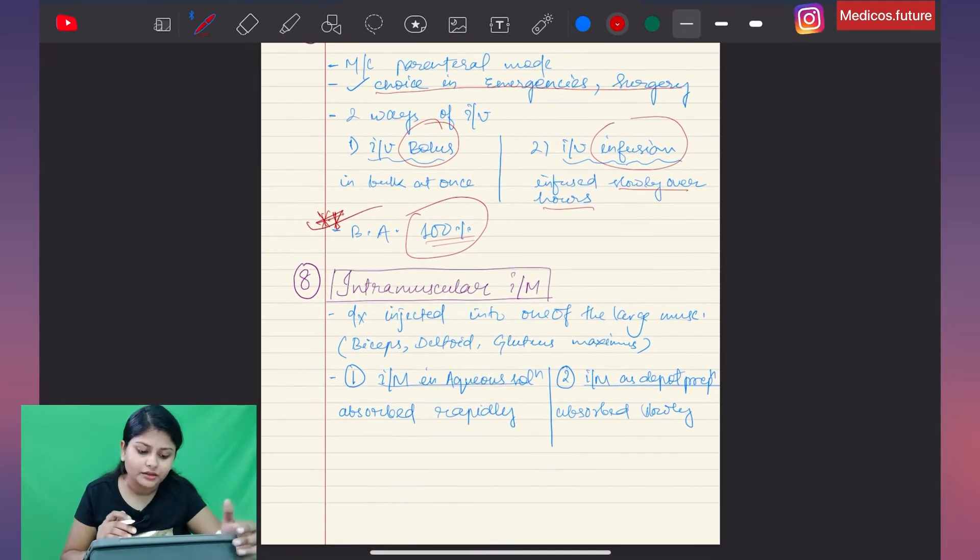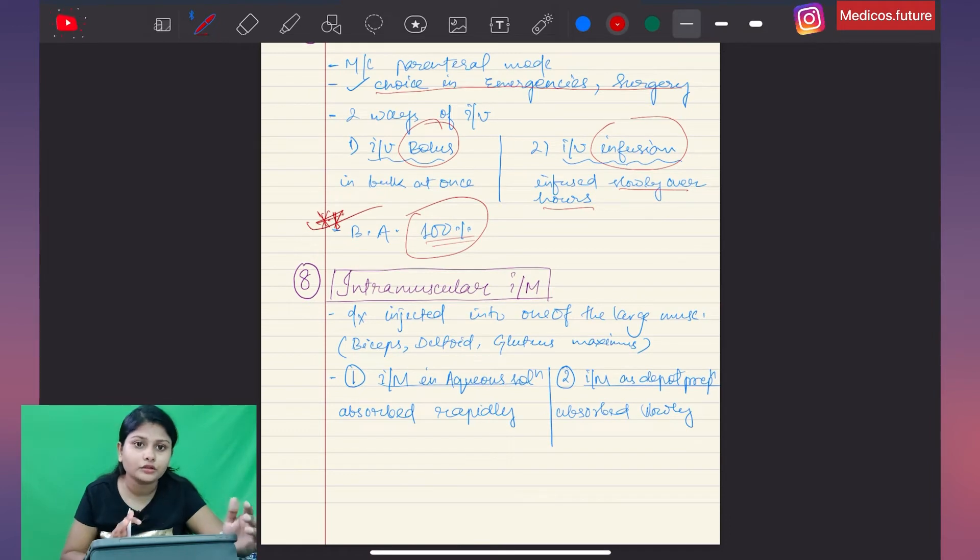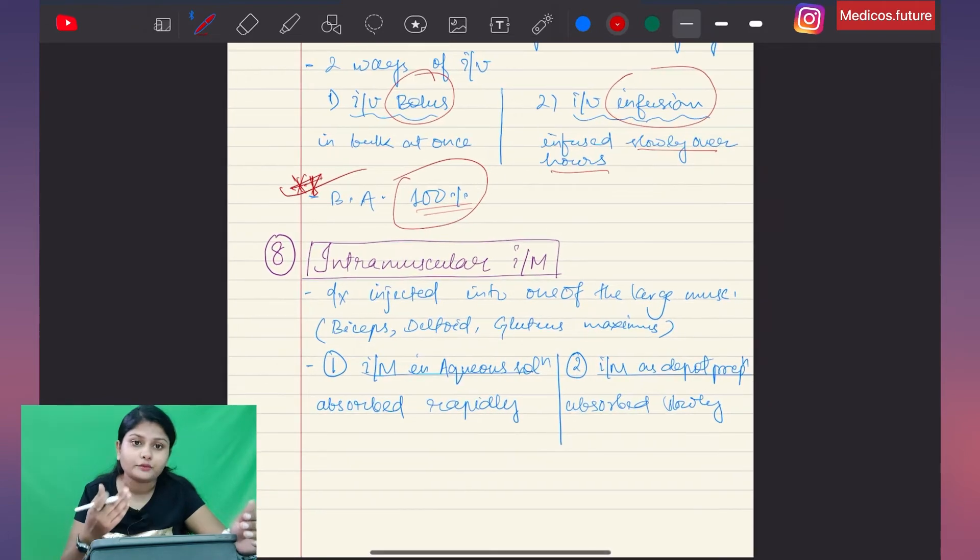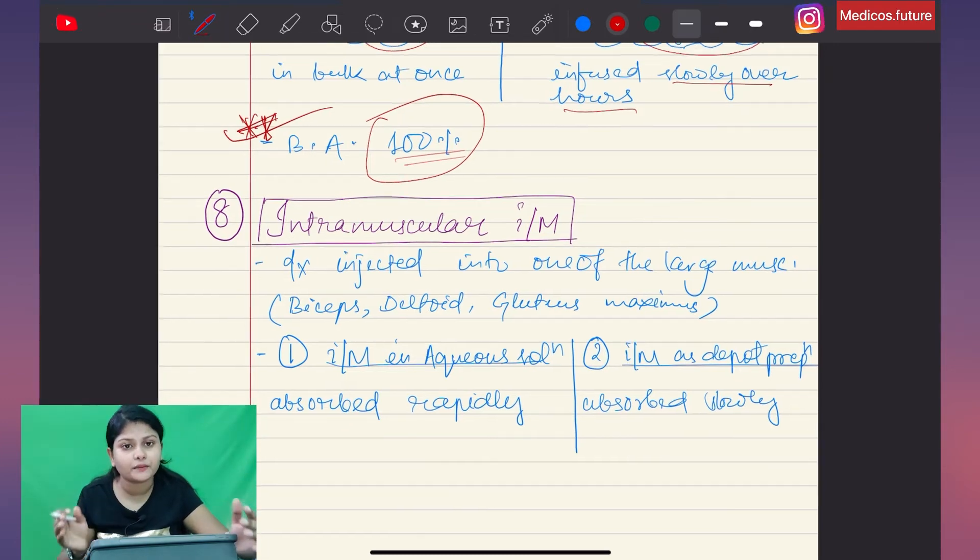Intramuscular: the drug is injected into one of the big muscles such as the deltoids, biceps, and gluteus maximus. It is slower but has two modes of action: aqueous solution and depot preparation. In aqueous solution, the drug injected in the muscles will rapidly absorb. In depot preparation, it will slowly release and absorb over a longer period of time.